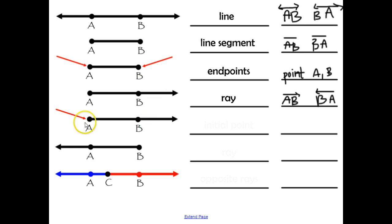This next one is pointing to the start of the ray. That is called the initial point. And again, we just want to list that as point A.